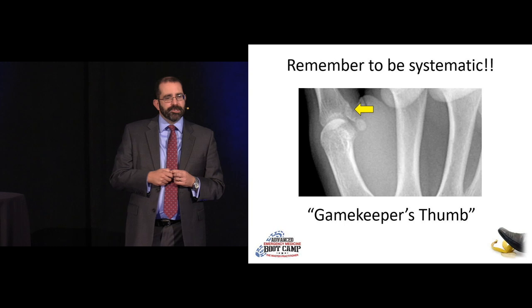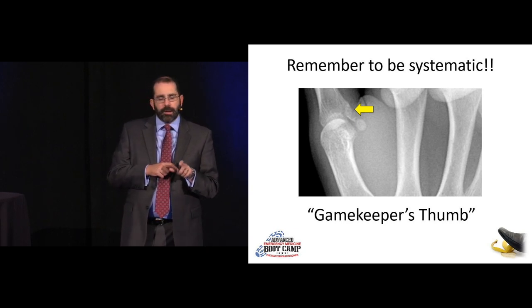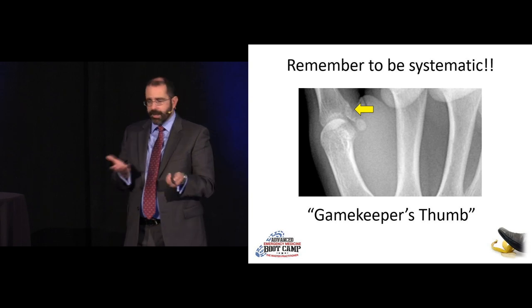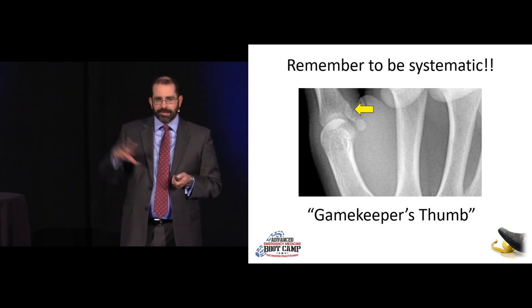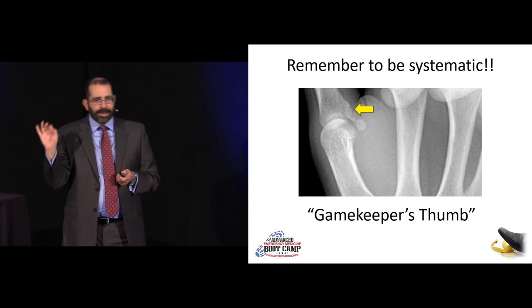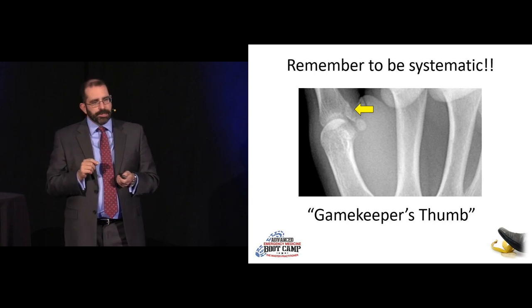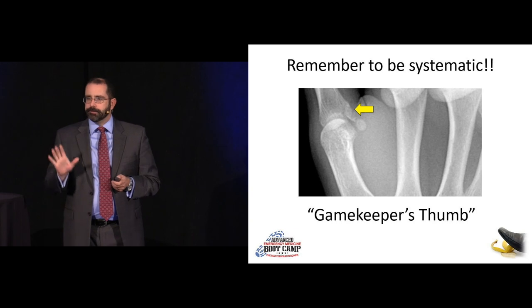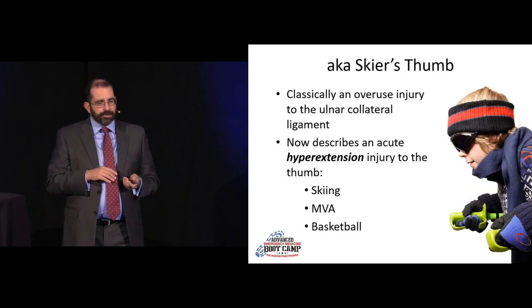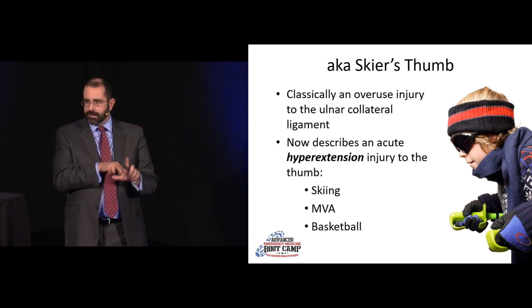It actually does matter. This is known as a gamekeeper's thumb or skier's thumb — an injury to the ulnar collateral ligament of the thumb. You can have a pure ligamentous injury without a bony fracture, which can be very subtle, but here the fracture guides us. The problem is this is what allows pinch and grasp — that's what separates us from other animals. Delay in treatment worsens prognosis. If you see this, get very prompt orthopedic follow-up.